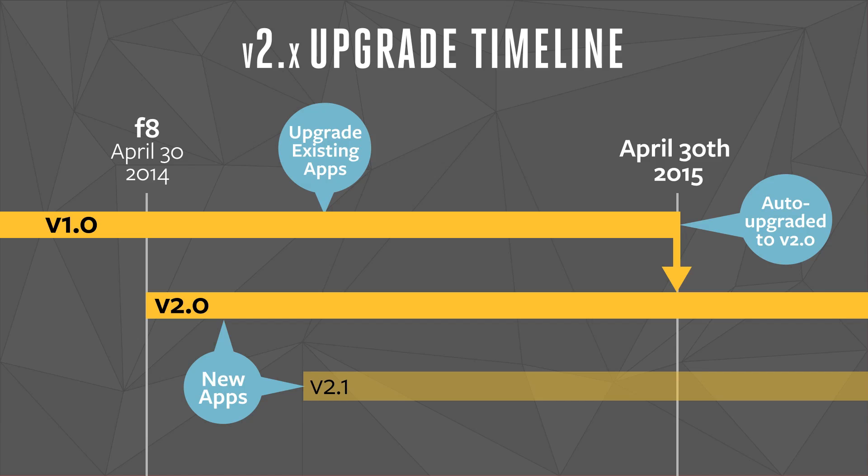On April 30th, 2015, any app which hasn't upgraded will be automatically switched to V2.0. This upgrade timeline applies to all apps, including websites, games on Facebook, and iOS and Android apps.